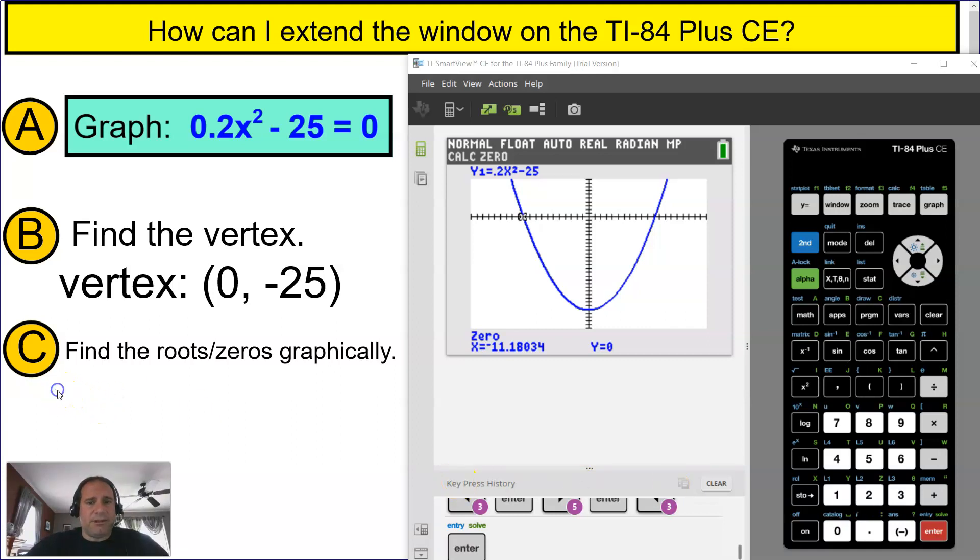So I'm going to put that is one root, and I'm going to round that: negative 11.18.